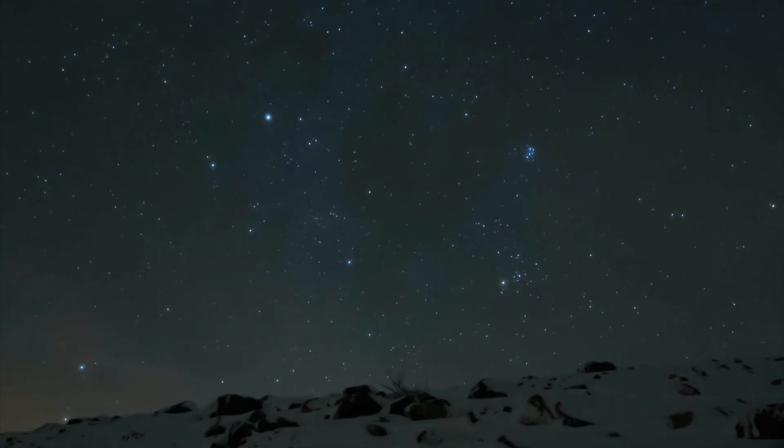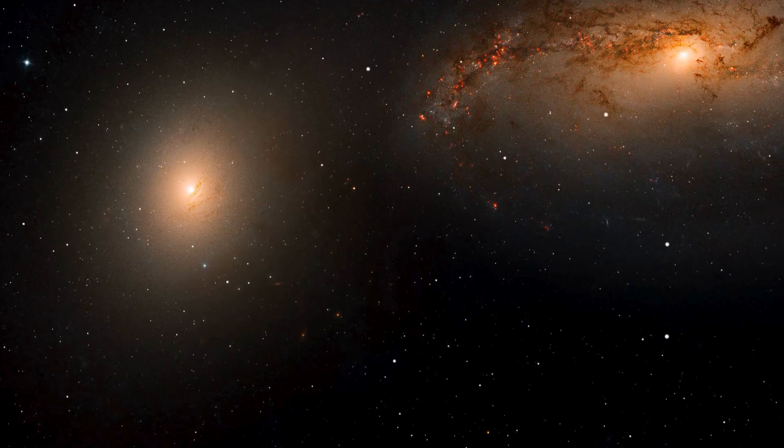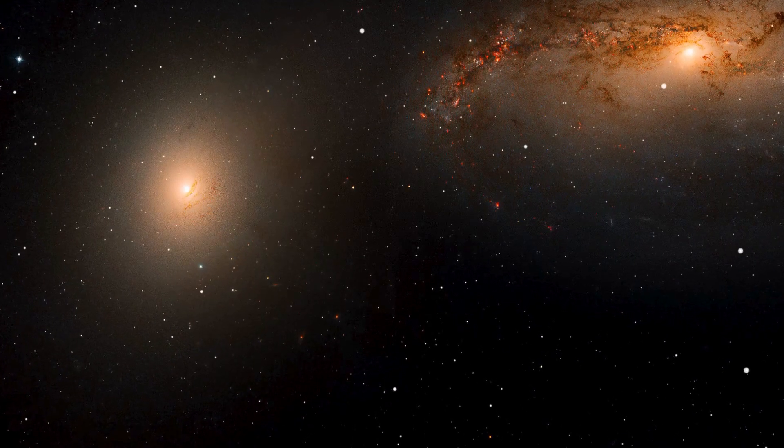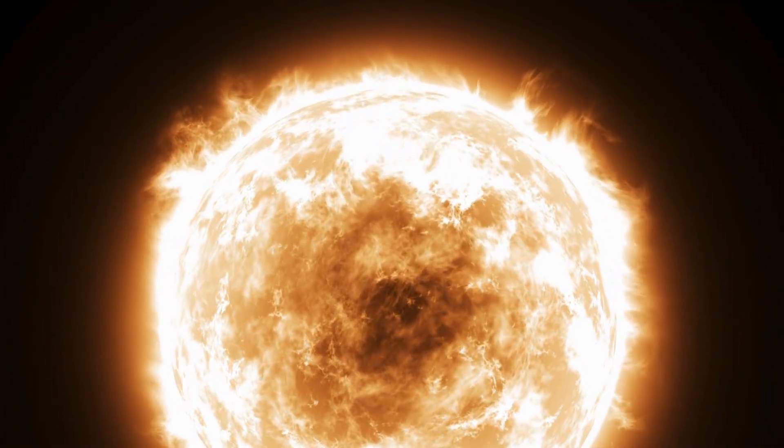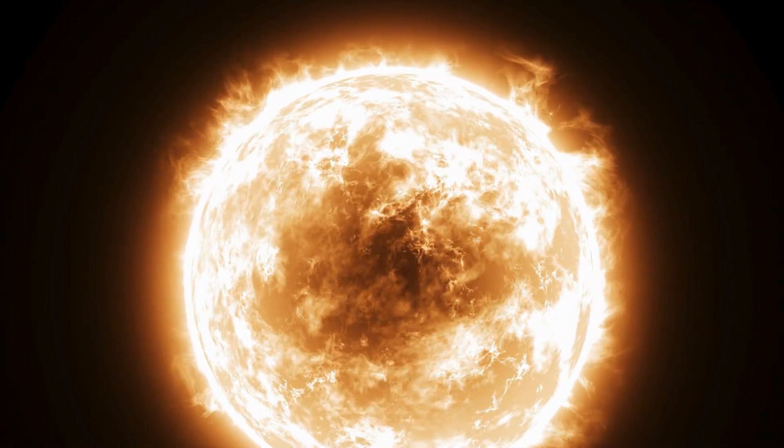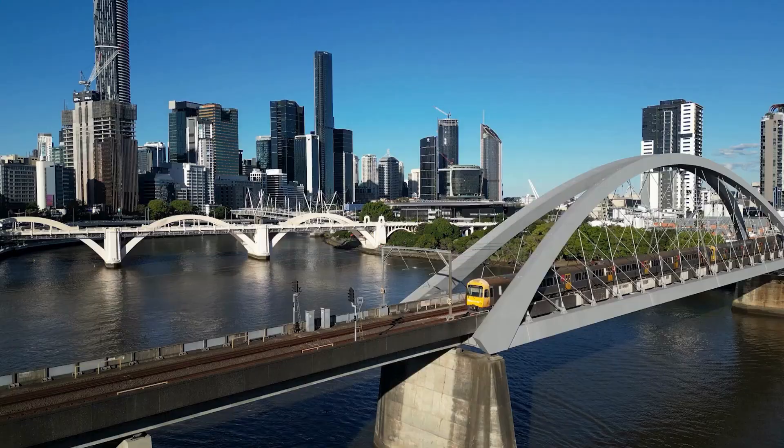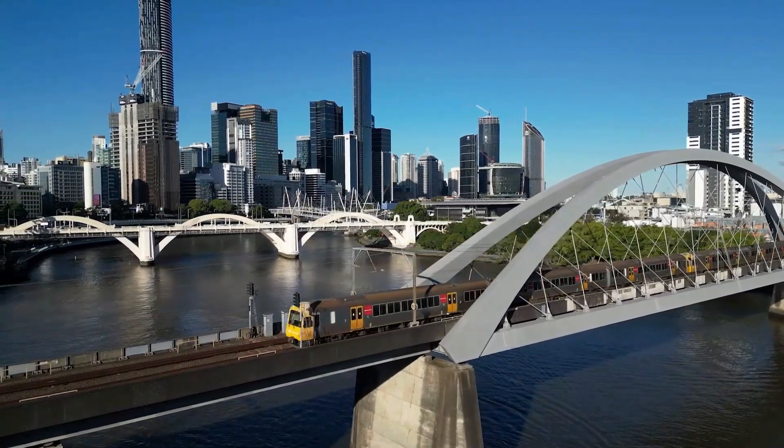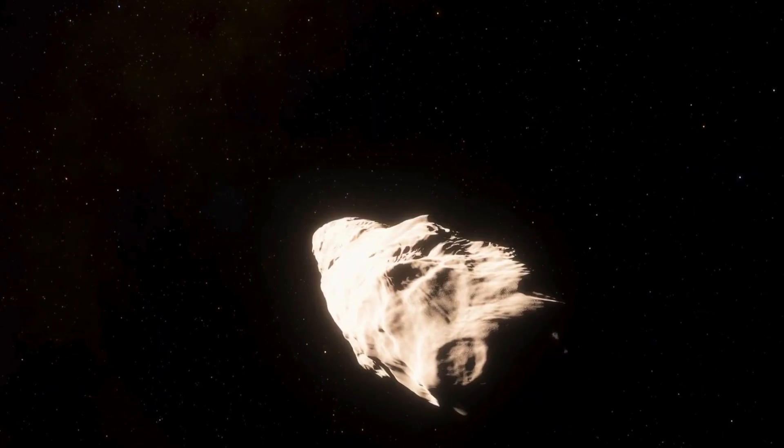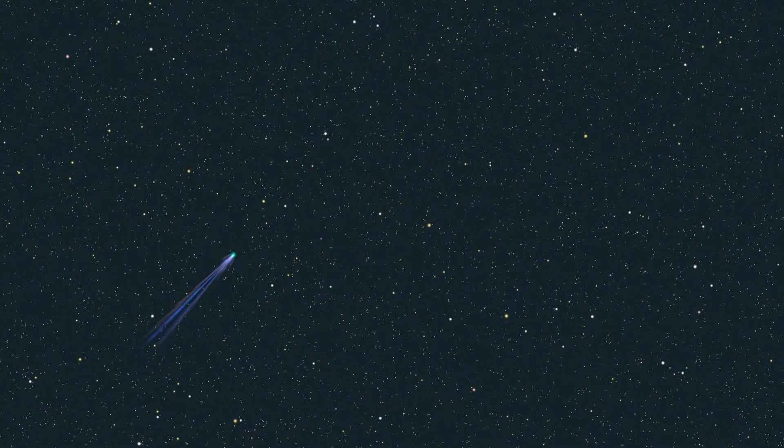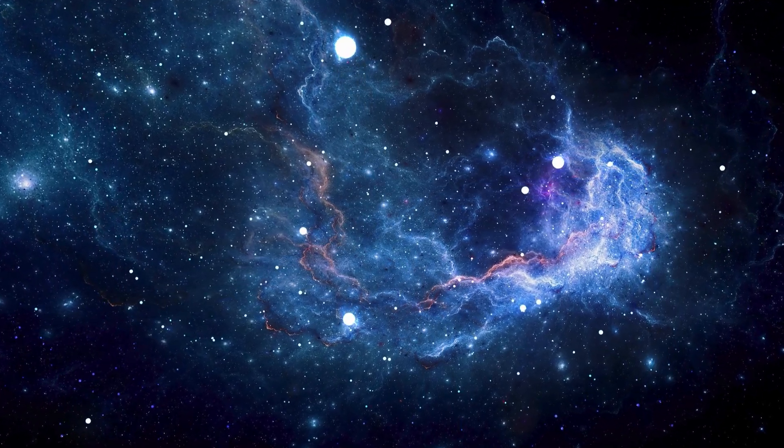Imagine hurtling through the vast emptiness of space, a rogue wanderer from another star system untouched by the pull of our sun for billions of years. Now picture that traveler slamming into our cosmic neighborhood at speeds that make a bullet train look like a leisurely stroll, over 30 kilometers per second.